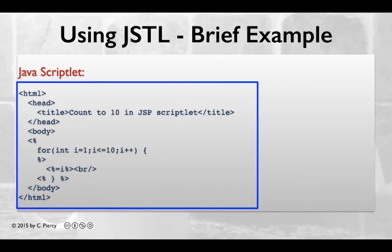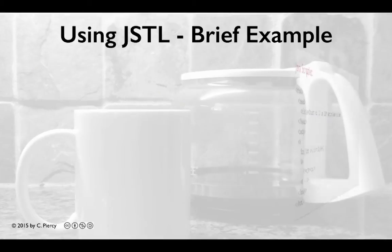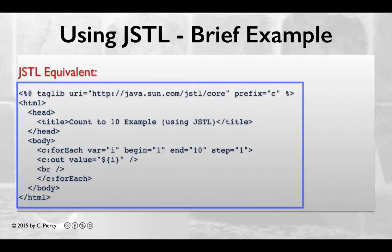In this case, we have mixed HTML tags with Java. One goal of using JSTL is to reduce the amount of Java that we'll see in the view components. Here, we see the equivalent code, but this time using JSTL tags.